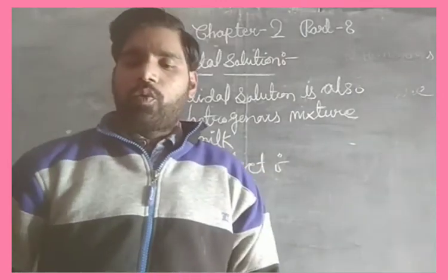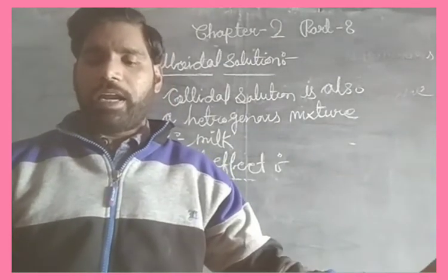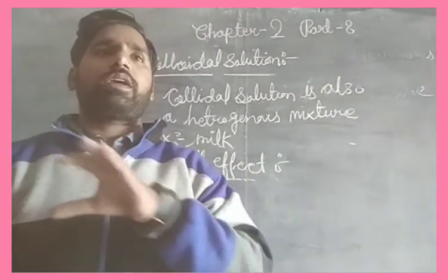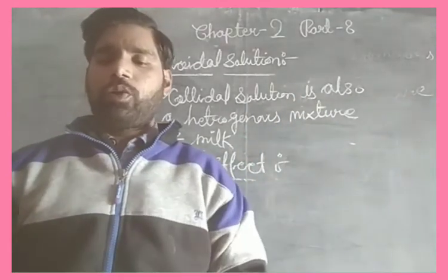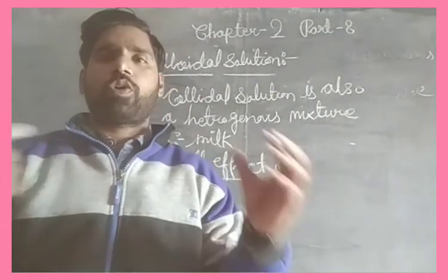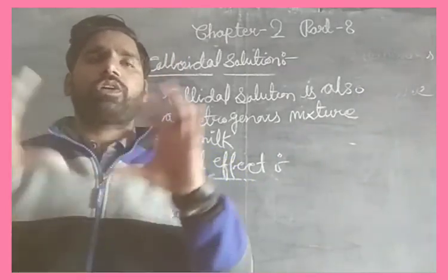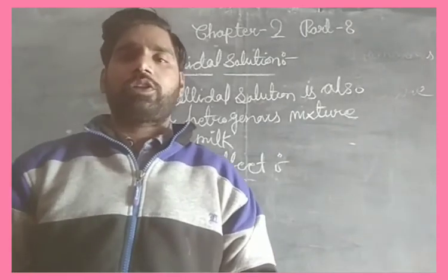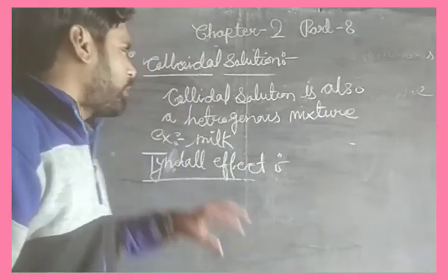When a beam of light passes through a small hole and enters a room, what happens? Due to scattering of light by the particles of dust and smoke — the dust particles present in the air cause the beam of light to be scattered. This is called the Tyndall effect.